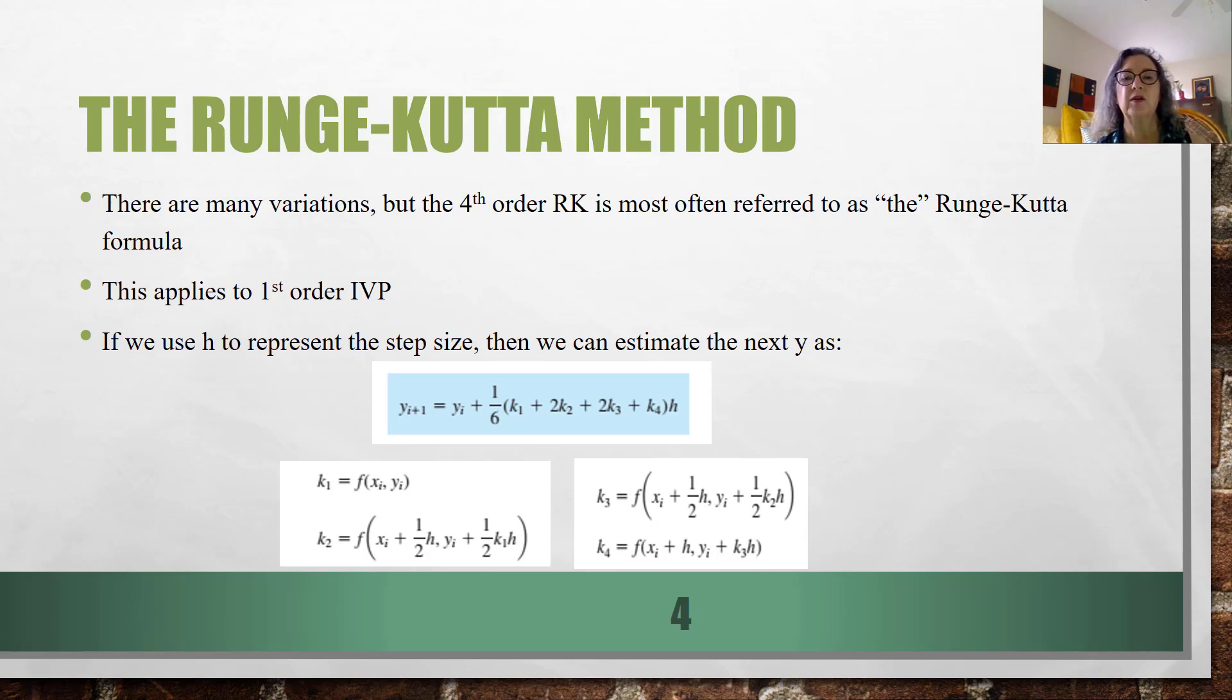And we are using h to represent the step size, and we can estimate the next y value using yi plus 1 sixth, a whole bunch of weird terms times that step size, my step in time, if time is my variable. And all those various terms, k1, k2, k3, and k4 are functions of x and y with variations on that step size as listed here.